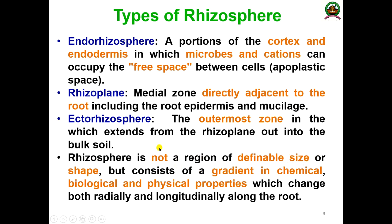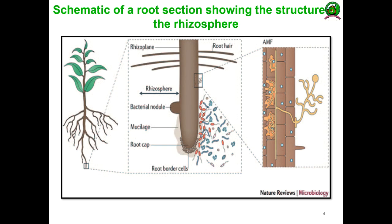The rhizosphere is not a region we can define by a particular size or shape — it constantly changes. It consists of a gradient in chemical, biological, and physical properties that change both radially and longitudinally along the root. From top to bottom, the concentration and location of chemicals, microorganisms, and physical properties all vary. This is an important characteristic of the rhizosphere.